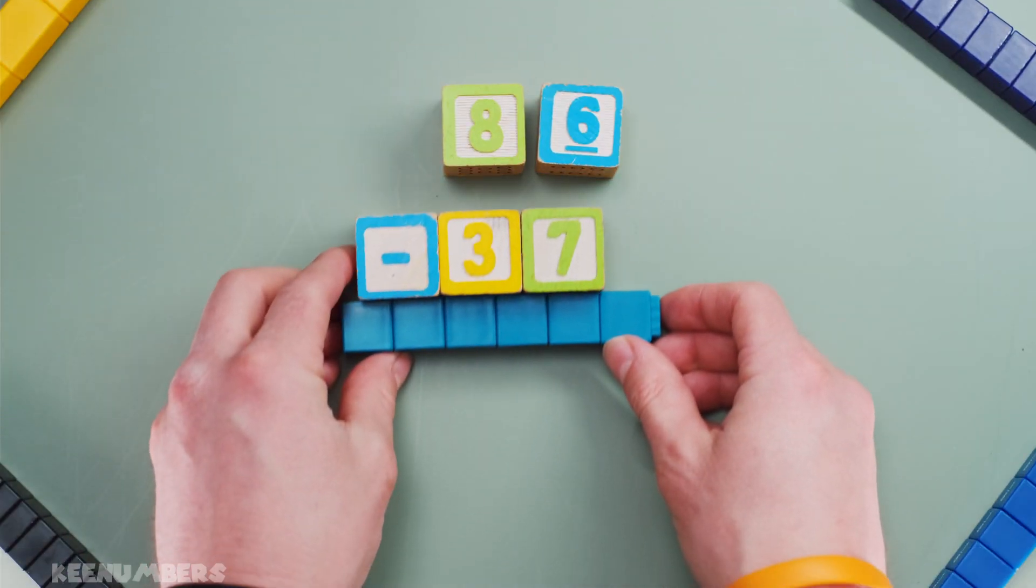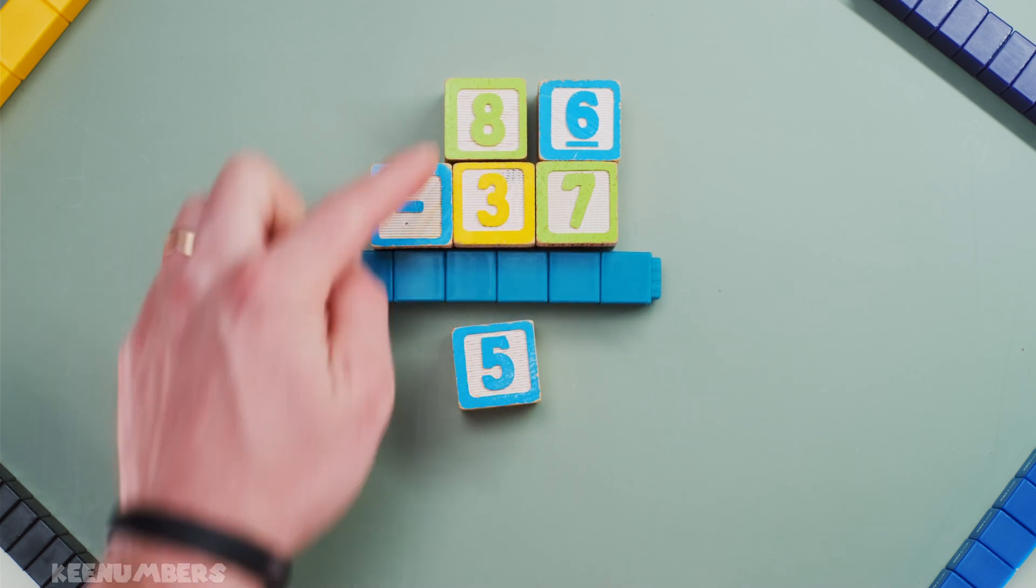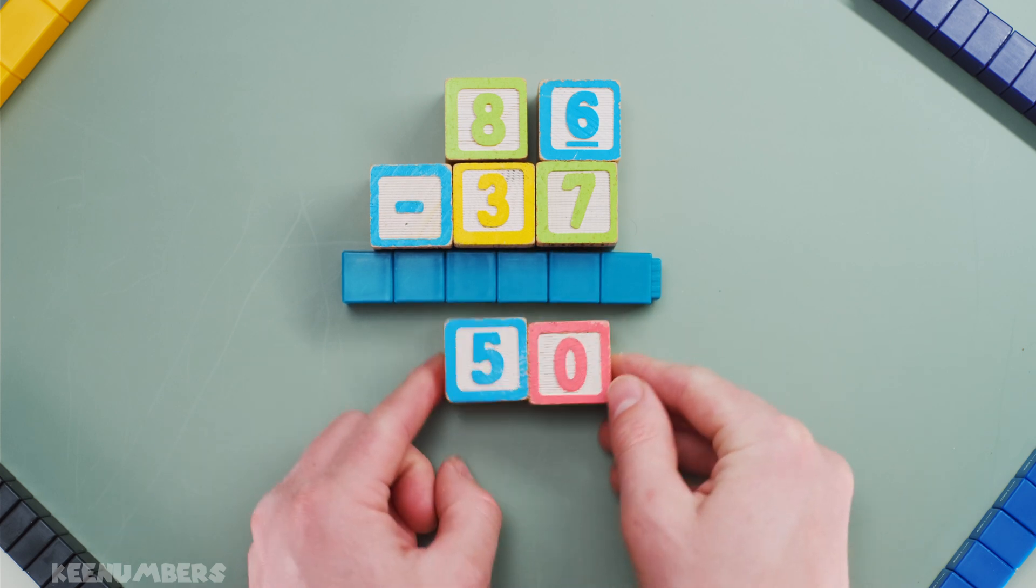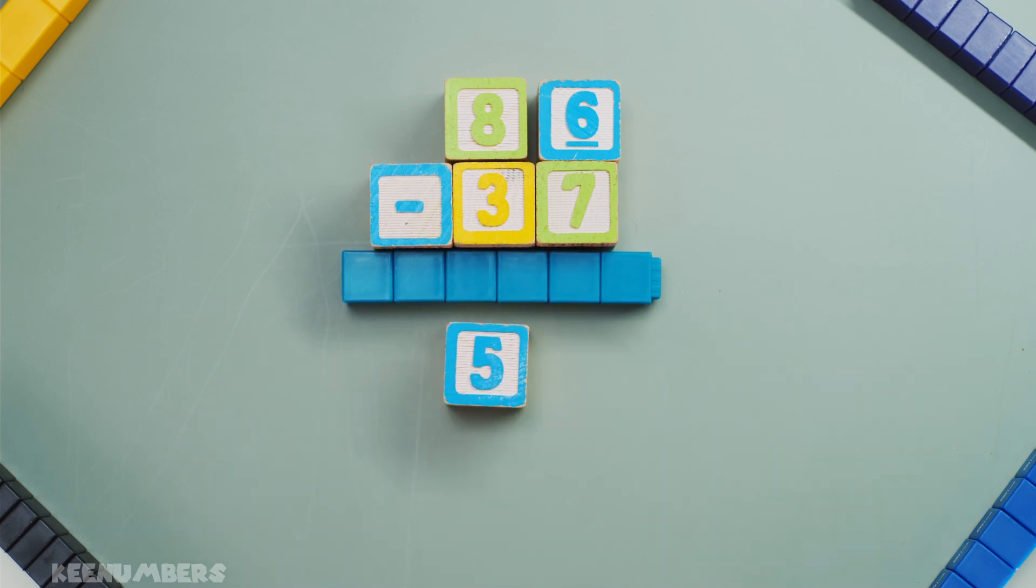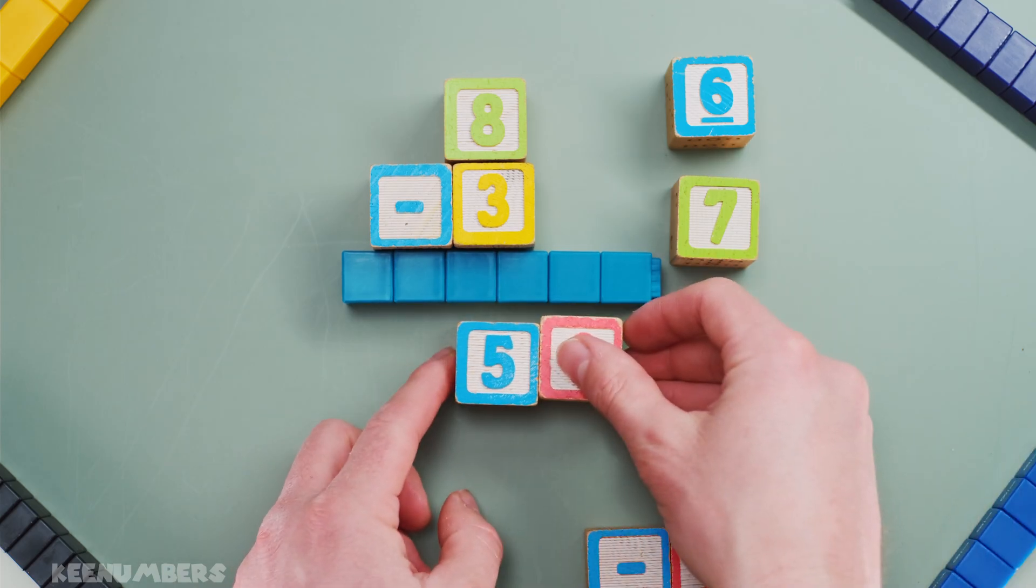86 minus 37, don't get scared now, this is going to have negative numbers. 8 minus 3, that's 5, it's 8 tens minus 3 tens or 5 tens. In other words, that's like saying 50. Okay, and then we have 6 minus 7. 6 minus 7, don't get scared. That's going to be a good old whopping negative 1. So you're really talking about 50 here.